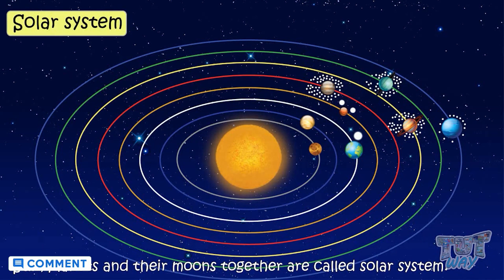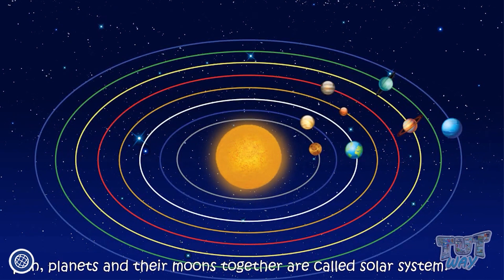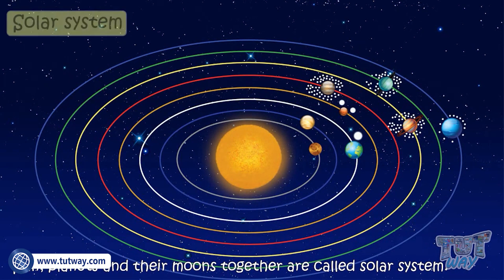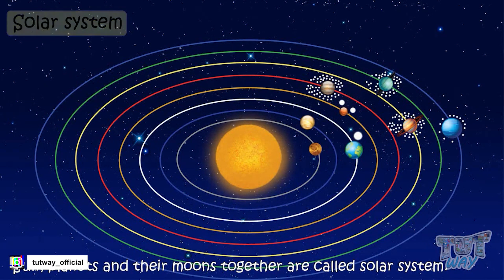Let's learn it again. Sun, planets and their moons together are called solar system. Now let's learn about solar systems.